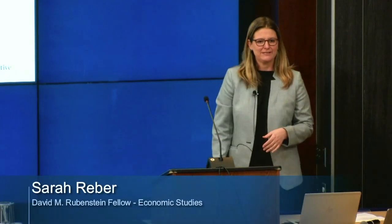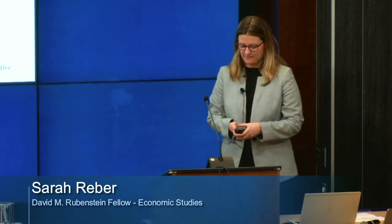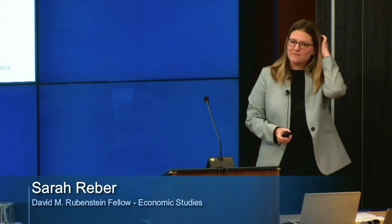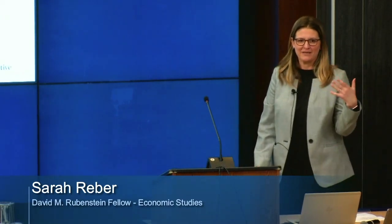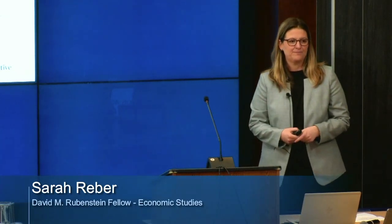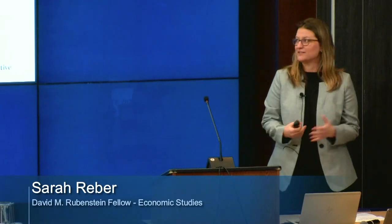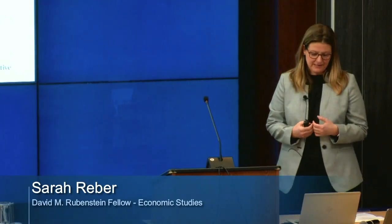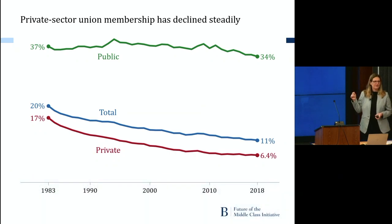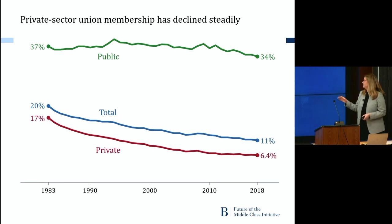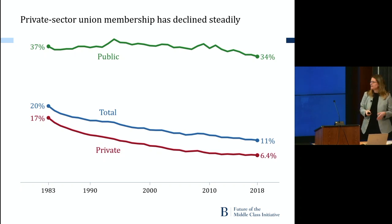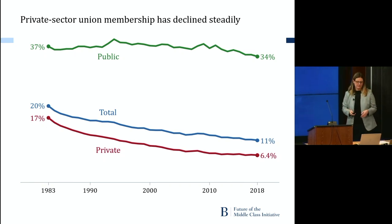The discussant, Sarah, begins her comments by thanking Marcus for the opportunity to read the paper. She opens by reminding the audience about the decline of union membership in the United States — down by about half since 1983, a continuation of a longer-term trend since about 1950. Private sector unionization is particularly very low, though a bit more workers are covered by collective bargaining agreements.